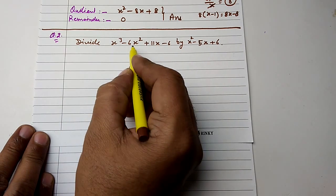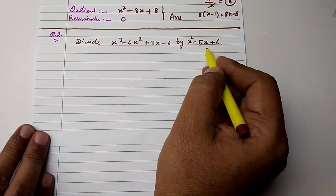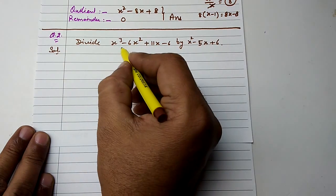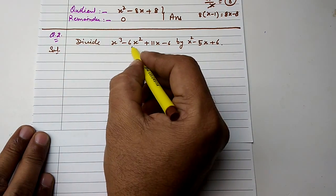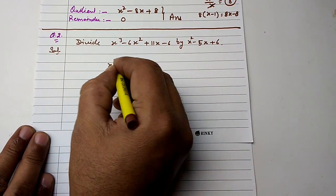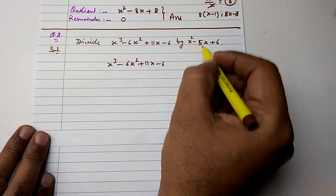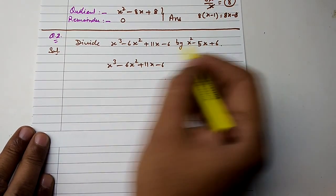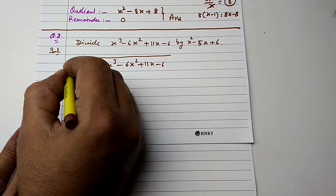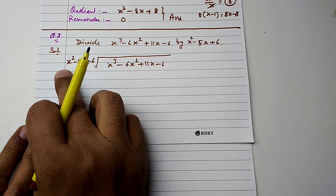Question: Divide x cube minus 6x square plus 11x minus 6 by x square minus 5x plus 6. The dividend is x cube minus 6x square plus 11x minus 6, and the divisor is x square minus 5x plus 6.